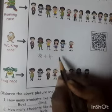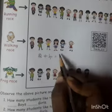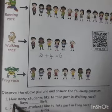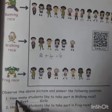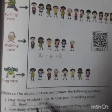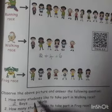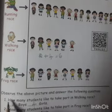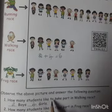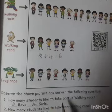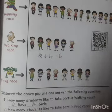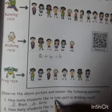2 plus 4 equals 6. 2 boys, 4 girls. How many students like to take part in walking race? 6 students.